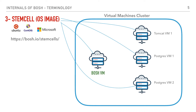For example, if you're using VMware vSphere, the official BOSH stemcell for Ubuntu Trusty is approximately a 500 megabyte VMDK file. With AWS, the official stemcells are published as AMIs that can be used in your AWS account.